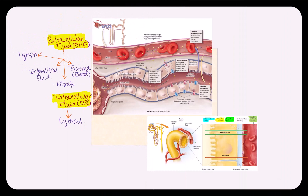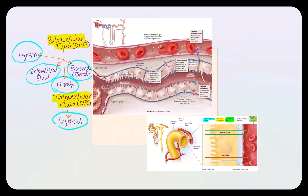Let's review the extracellular fluids covered so far. We have the interstitial fluid — the fluid that surrounds our cells — plasma, the fluid component of blood, lymph found in our lymphatic vessels, and filtrate, produced through glomerular filtration that ends up in the capsular space of the glomerular capsule. We also have the intracellular fluid, which is the cytosol — the fluid found inside our cells.